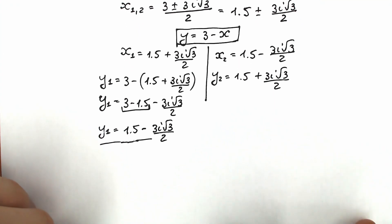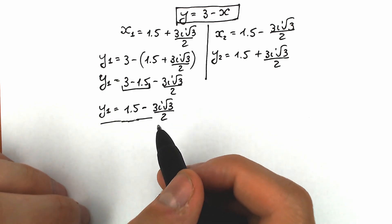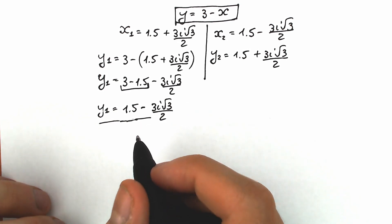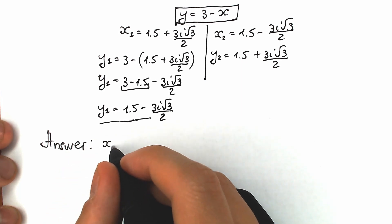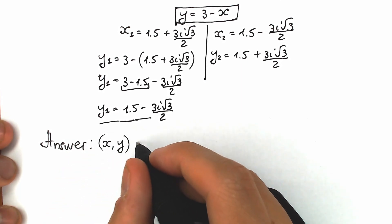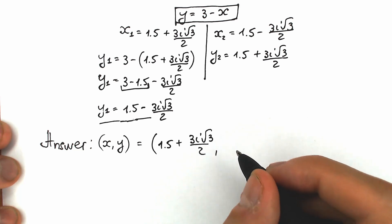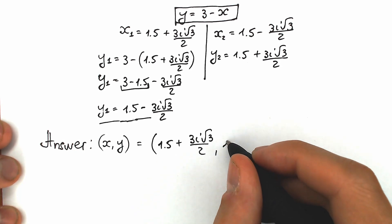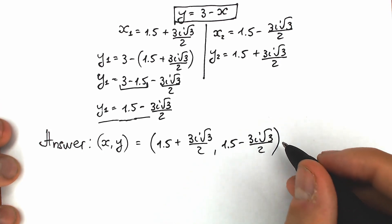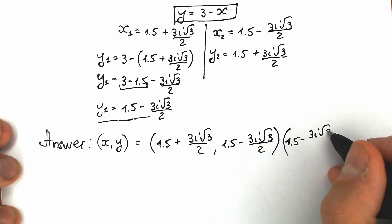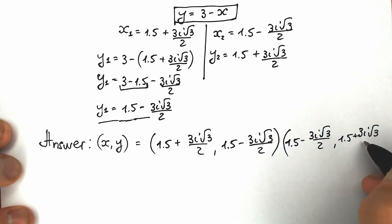Let's write our final answer. We have two pairs of complex solutions. The first pair: x₁ equals 1.5 plus 3i√3 over 2, and y₁ equals 1.5 minus 3i√3 over 2. The second pair: x₂ equals 1.5 minus 3i√3 over 2, and y₂ equals 1.5 plus 3i√3 over 2. Now let's check this solution, because it's complicated — we have fractions and square roots, so it's really interesting for us to verify.